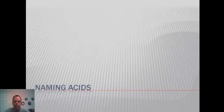In this last section of the naming chapter, we want to look at how we name acids, because naming acids are a little bit different than how we name ionic compounds, metal with non-metal, or covalently bonded compounds, compounds that contain two non-metals.